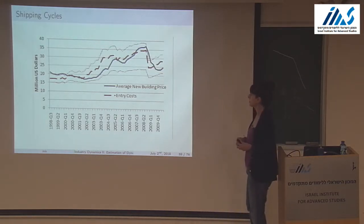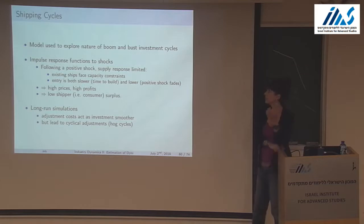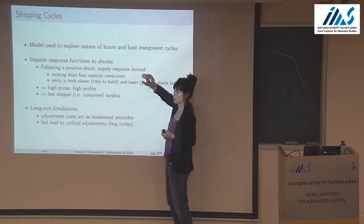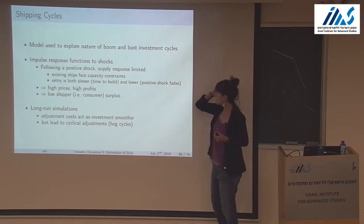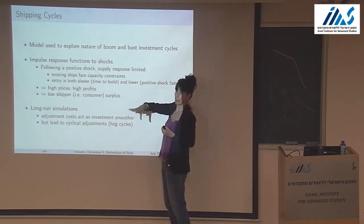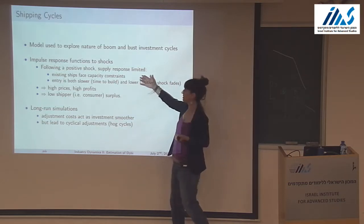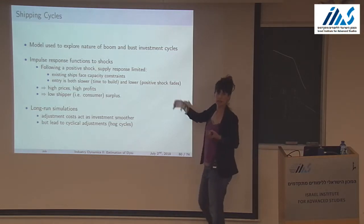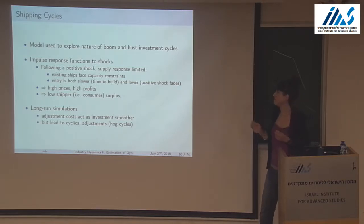Then I use the model to explore the nature of investment cycles. Looking at impulse response functions to shocks — the interesting case is a positive shock where supply restrictions are really binding. Following a positive shock, supply response is limited because ships face capacity constraints, and entry is slower due to time-to-build and lower because the shock is fading — it's a mean-reverting demand process.